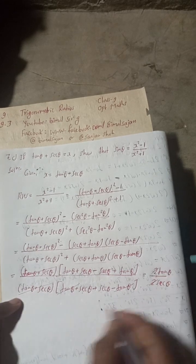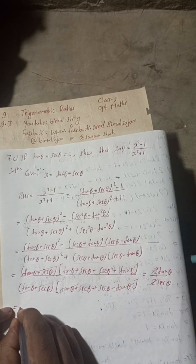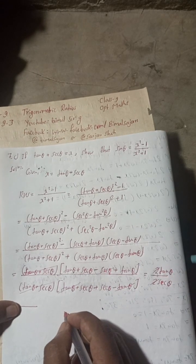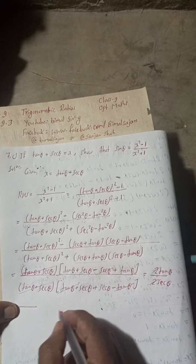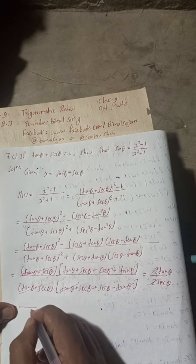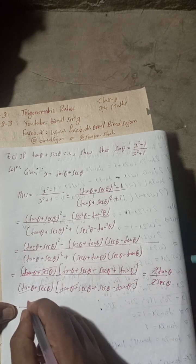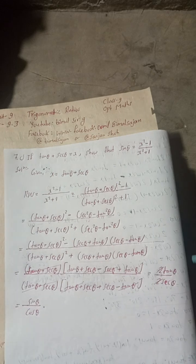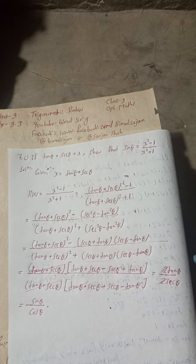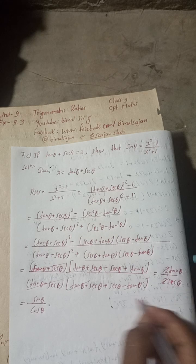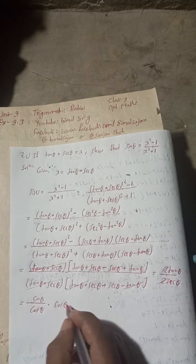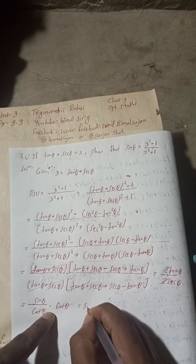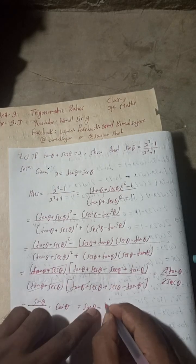The 2s cancel, leaving tan θ / sec θ. Now tan θ = sin θ / cos θ and 1/sec θ = cos θ. So (sin θ / cos θ) × cos θ = sin θ. This equals the LHS. Hence proved.